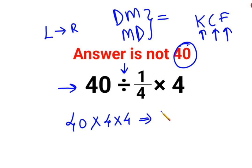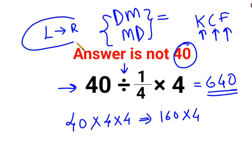The answer comes out to be 40 into 4, which gets you 160, multiplied by 4. The answer for this question is supposed to be 640. So I hope you understood that whenever you have these kind of situations, you have to always go from left to right.